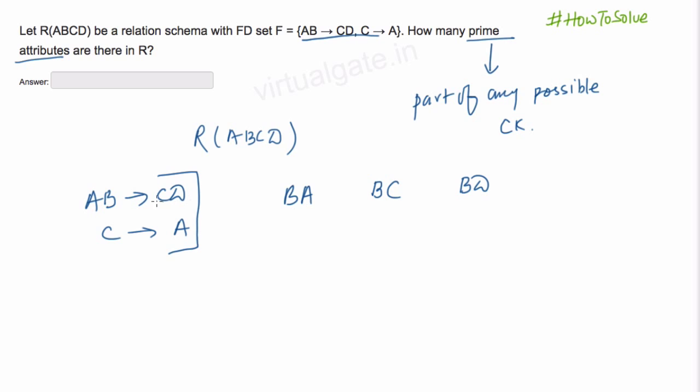Now B, A or A, B. From the first functional dependency A, B gives C, D. If we find out B, A plus, this B, A can derive C, D. So we will have A, B, C and D. As all the attributes are determined, we can say that B, A is a candidate key.